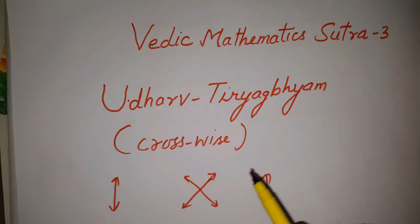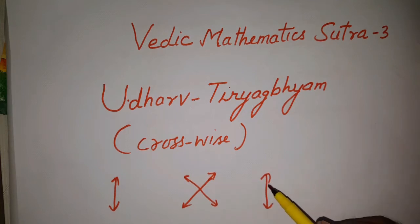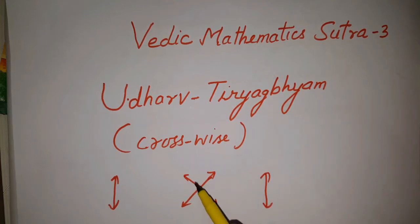This Sutra is Crosswise Multiplication. There are three steps. The first step is Vertical Multiplication. The second step is Crosswise Multiplication. The third step is Vertical Multiplication.